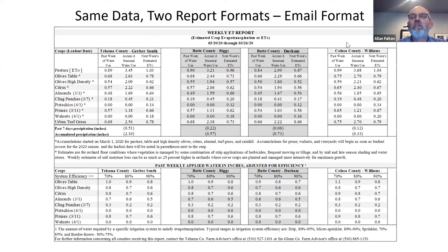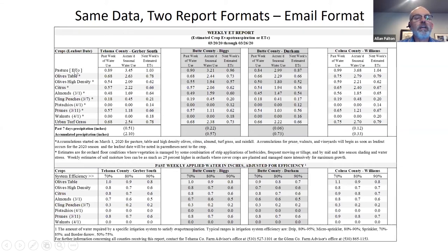This slide shows a sample of one format of an email report. They take on various formats, but they all have the same similar information. I'm not going to dive too deep into the content of this table at this point — there'll be separate tutorials where we work with the information in greater detail. I would like to bring to your attention the crop list on the far left side. Here we have the irrigated pasture and the short grass reference crop, and then a list of various different types of perennial orchard crops growing in our area. We also include an estimate for urban turf grass. At the bottom of each table, you'll see we give a past week's rainfall amount, and we also keep a cumulative rate of rainfall from the earliest leaf-out date of the crops that we report — in this case, that would be almond.